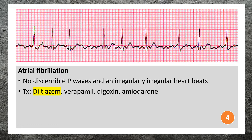Atrial fibrillation is characterized by no discernible P waves and an irregularly irregular heartbeat. It has strong associations with heart failure, coronary artery disease, valvular heart disease, diabetes mellitus, and hypertension. Common medications for managing atrial fibrillation include diltiazem, verapamil, digoxin, and amiodarone.